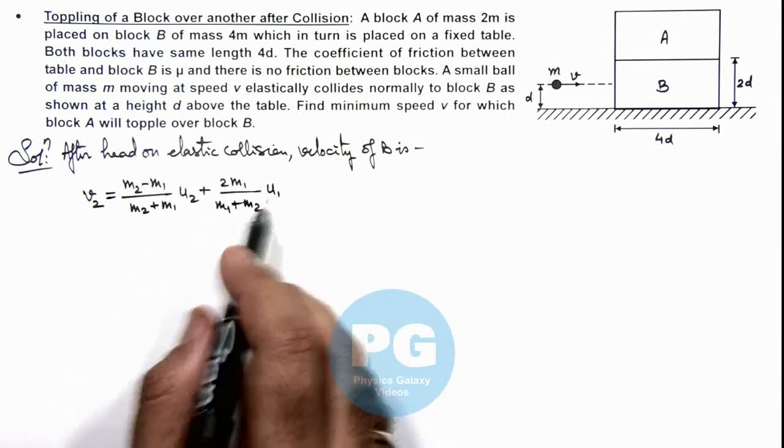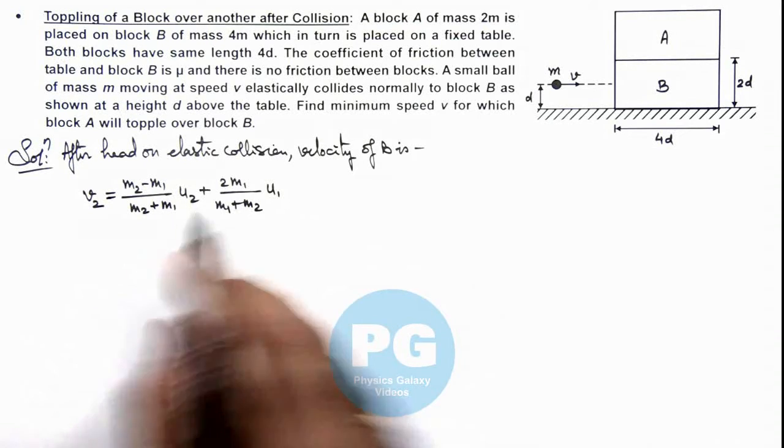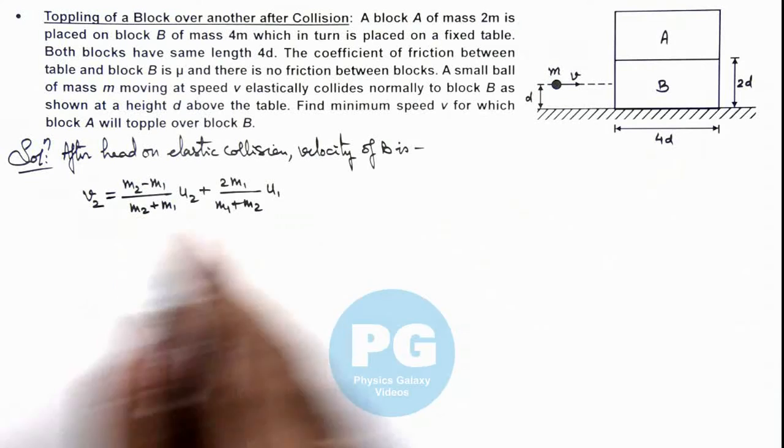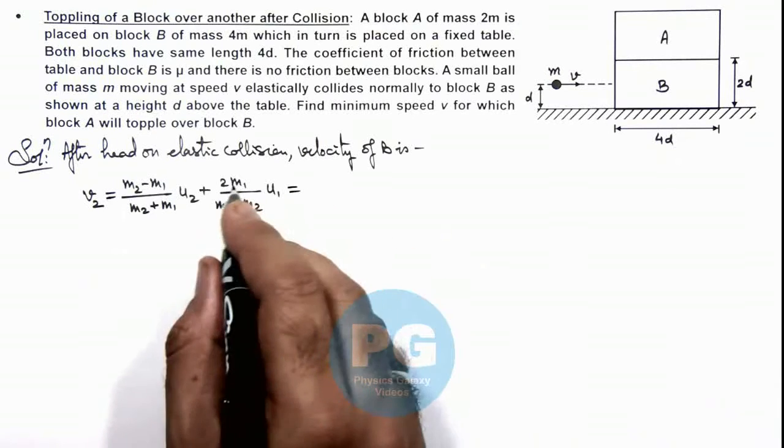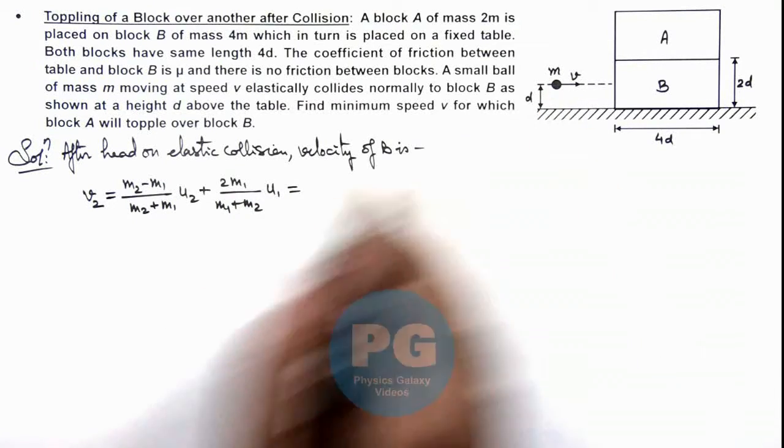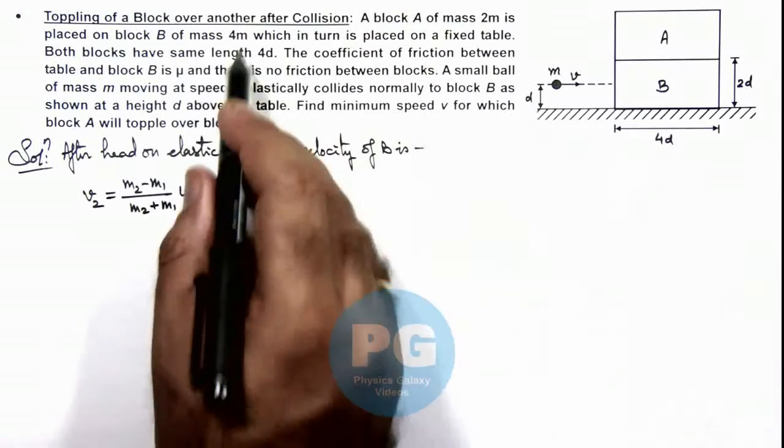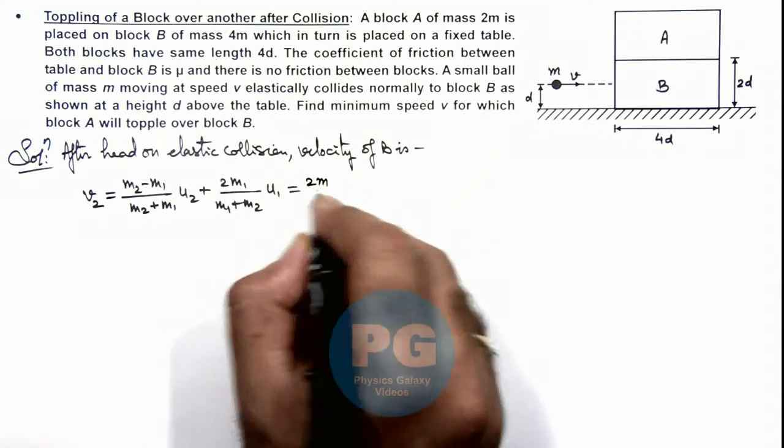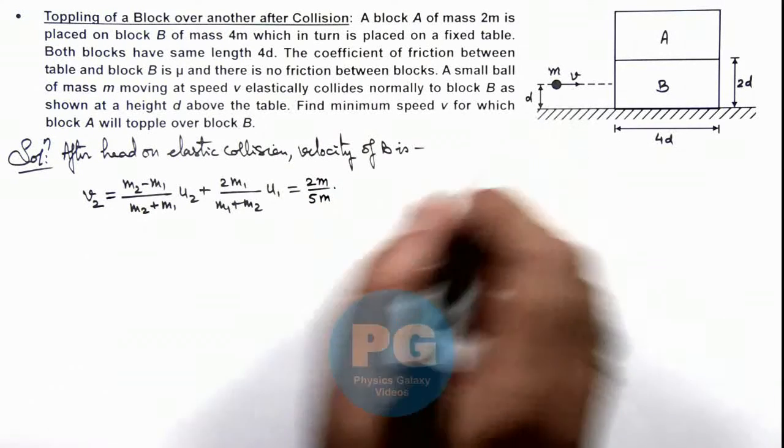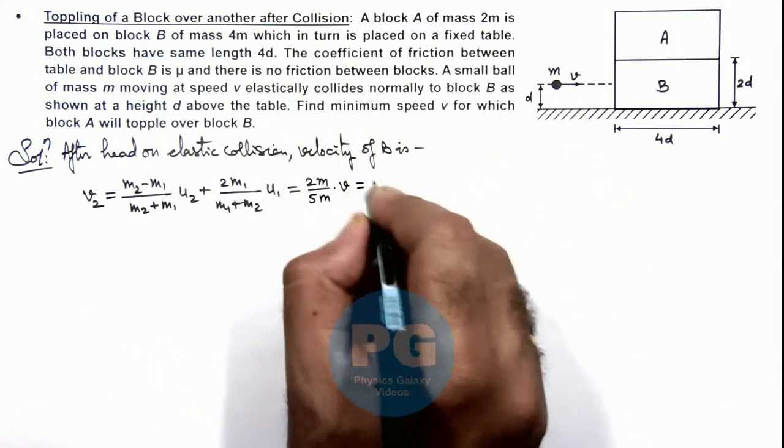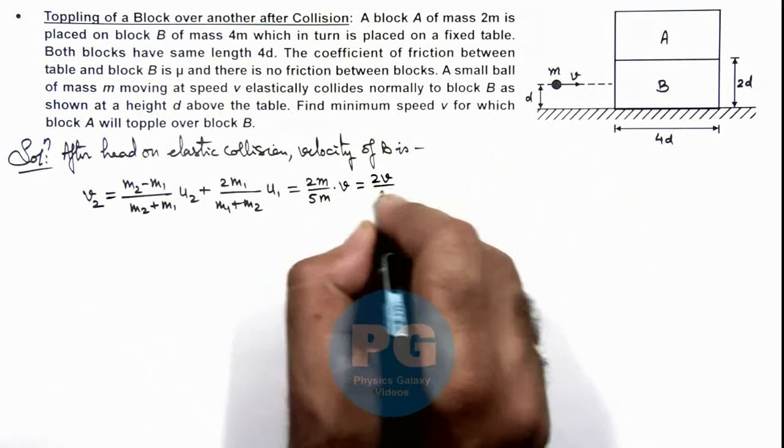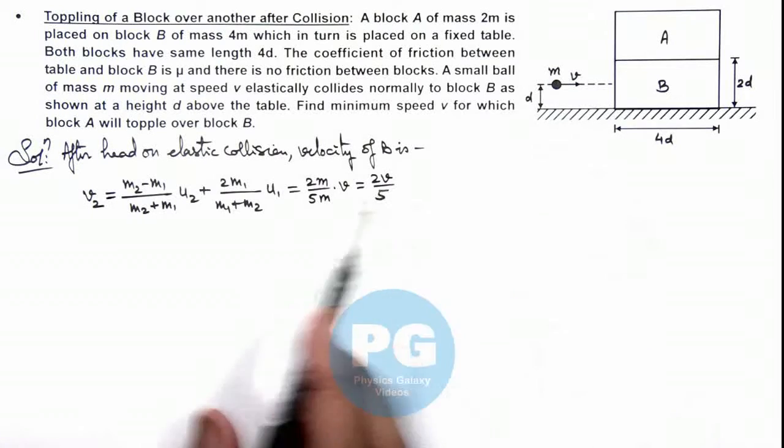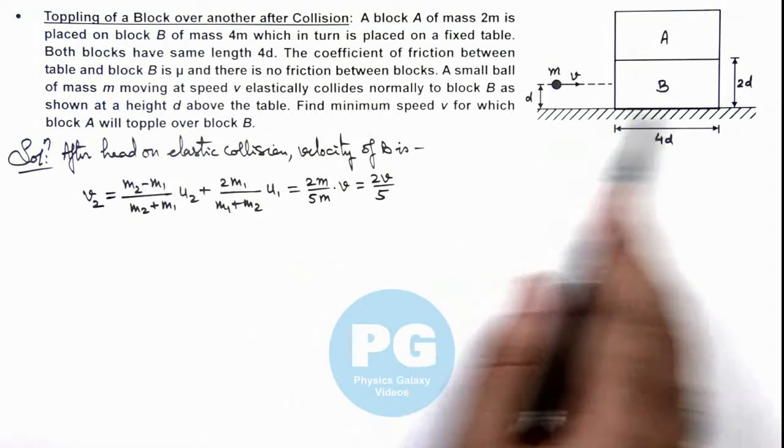In this situation u2 is the initial velocity of the second body which here is zero so first term will vanish. And here in second term we can write m1 as m and m2 as 4m the mass of this block B. So here we can write it 2m by 5m multiplied by the initial speed of ball that is v. We can write it 2v by 5, this is the velocity with which B will start moving.